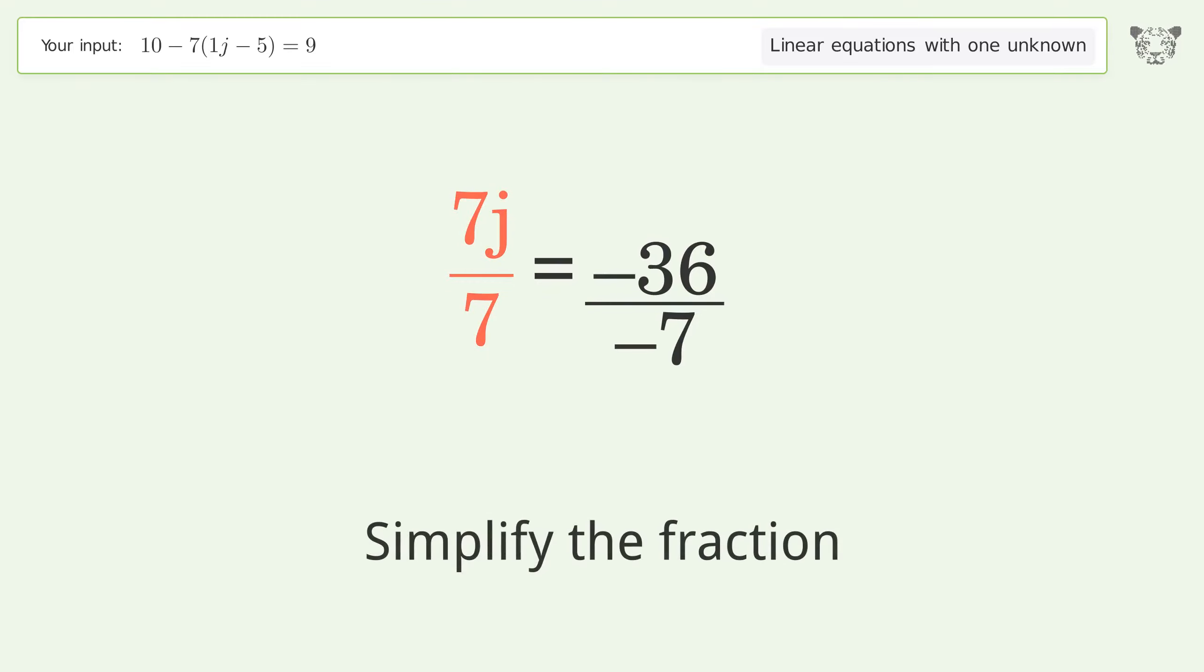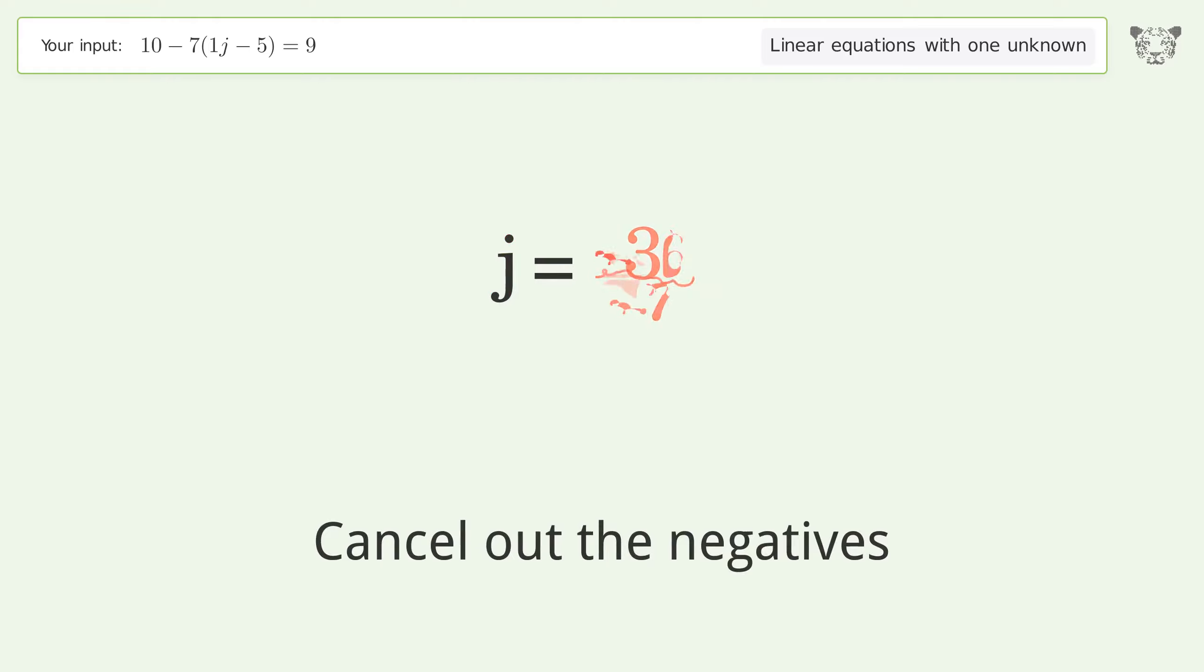Simplify the fraction. Cancel out the negatives. And so the final result is j equals 36 over 7.